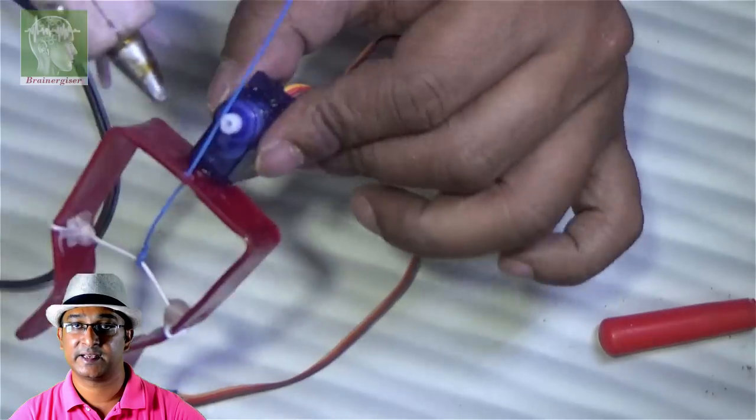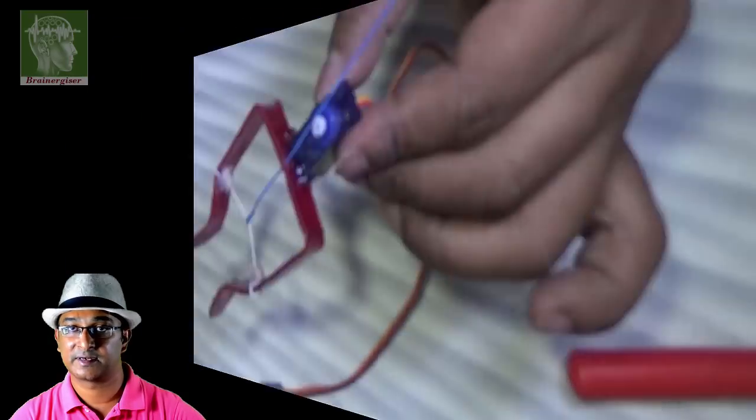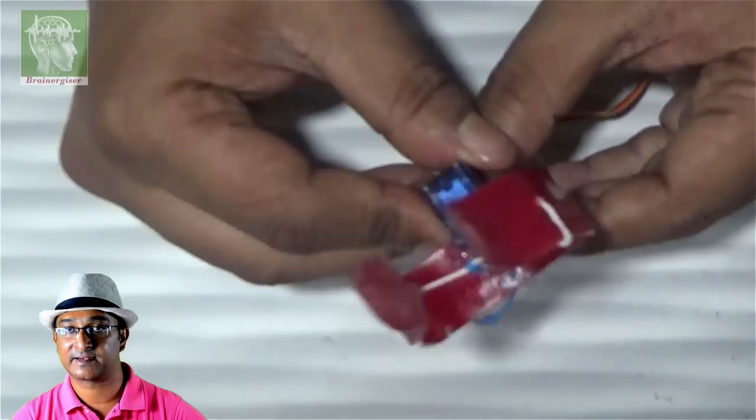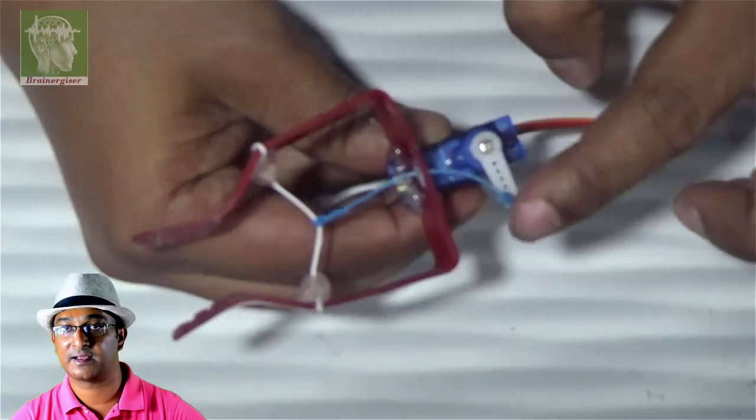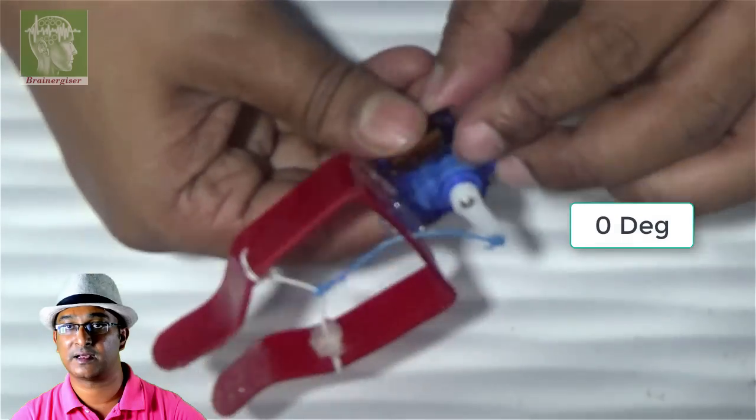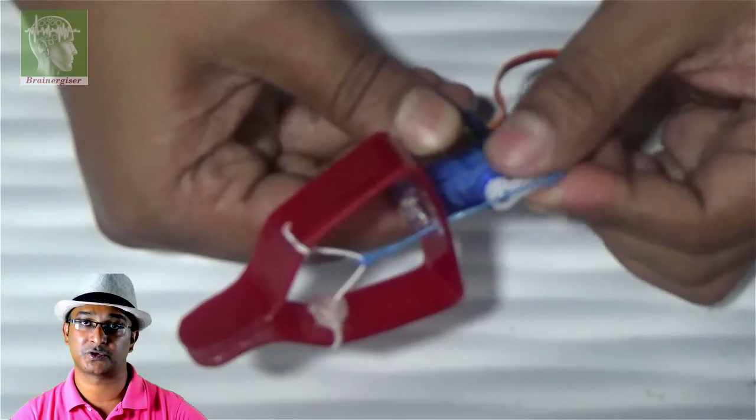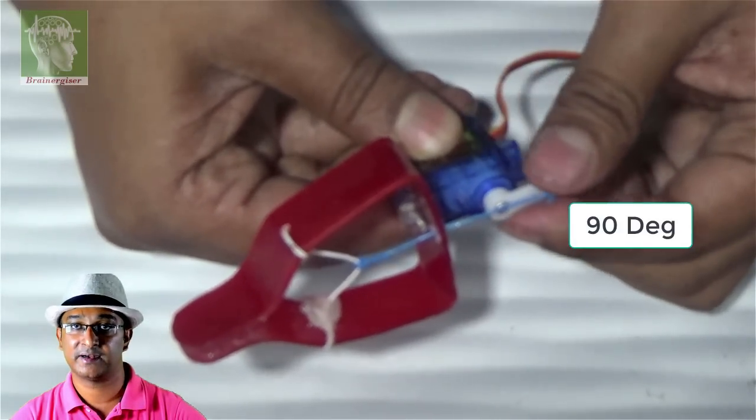Now with a shaft gripper we'll hold that and tie that with the shaft. Now if it is at zero it is open, if it has 90 degrees then it is closed. See, open.